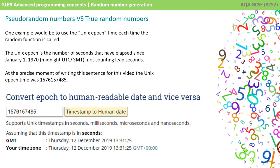One typical example, which has been used by people in the past, is to use what is known as the UNIX epoch time each time the random function is called. Now the UNIX epoch time is the number of seconds that have elapsed since January 1, 1970 at midnight, not counting leap seconds. So at the precise moment of writing this sentence for this video, the UNIX epoch time was 1576157485.